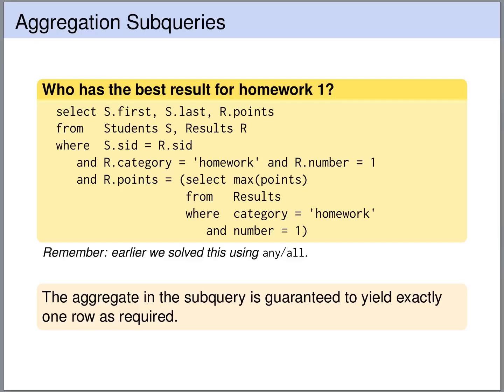On this slide we see one particular use of aggregation subqueries. We can use aggregation subqueries to make a query that returns precisely one value — one column and one row. In the subquery we are querying the results table, focusing on homework1 results, and then aggregating all the points using the max function. So this query will return the maximum number of points that any student has gotten for homework1.